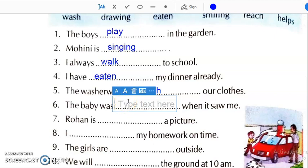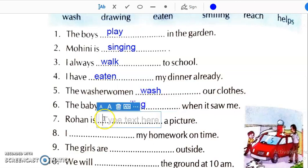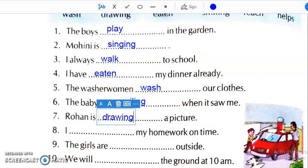The baby was when it saw me. Jab wo baby mujhe dekhta hai, wo kya karta hai? Was is written. So, we have to write smiling. Rohan is dash a picture. Rohan kya kar raha hai? Is likha hai. So, we have to write the verb only drawing.